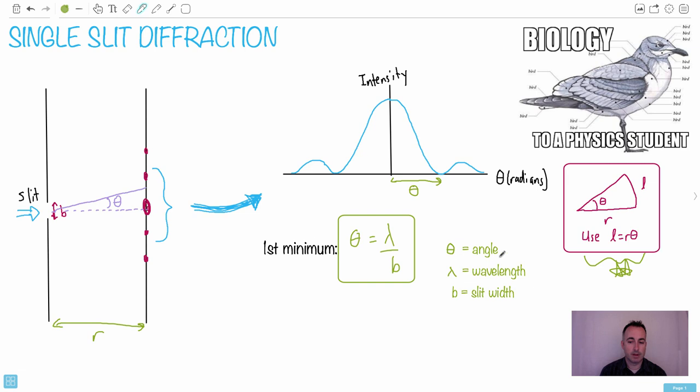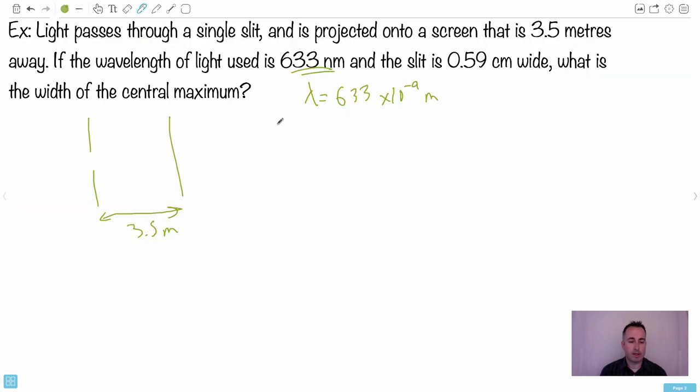Now the slit is 0.59 centimeters wide. That's B - B is the slit width. By the way, I forgot to tell you, this angle is in radians. Wavelength is the lambda in meters, and the slit width is also in meters. So notice we have an angle which is in radians, has meters over meters, so that's where the units cancel out. So here I am - I've got this value of B which I know. I know that B is 0.59 centimeters. Now let's be very careful with this. A centimeter is times 10 to the minus 2 meters. So it's really important that you put in the proper units for this.